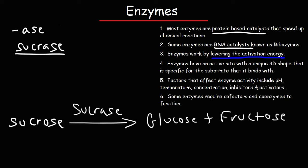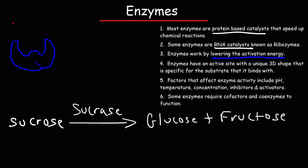Enzymes have an active site with a unique three-dimensional shape that is specific for the substrate that it binds with. The enzyme will be drawn here, and the substrate is sucrose — a disaccharide made up of two sugar units, glucose and fructose. Using E for enzyme and S for substrate, the active site of the enzyme has a unique shape that is complementary to the substrate.